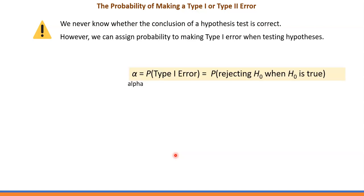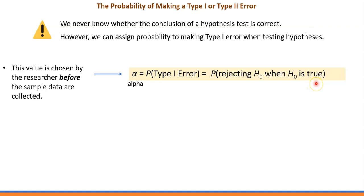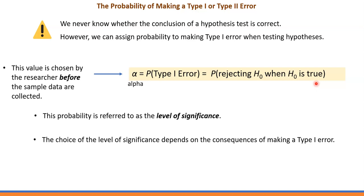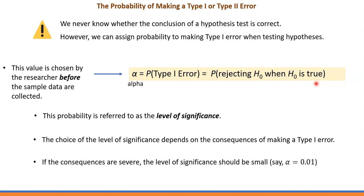We denote the probability of making a Type 1 error by the Greek letter alpha. Alpha represents the probability of rejecting H0 when in fact H0 is true, and that value is chosen by the researcher before the sample data are collected. This probability is referred to as the level of significance. The choice of the level of significance depends on the consequences of making a Type 1 error. If the consequences are severe, the level of significance should be small — for example, alpha = 0.01 — meaning there is only a 1% chance of rejecting the null hypothesis when it is in fact true.